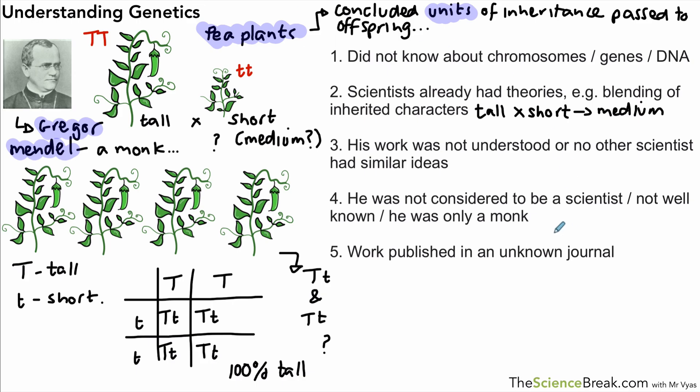His work, when he did publish it, was published in a fairly unknown journal. I believe it was some kind of gardening journal rather than a science journal, so not many scientists actually had a look to see what he had done and what he had written about. And the last thing was that he had only worked on pea plants. So even if his ideas were correct, he had only done the work on pea plants. Would it have the same results on other types of plant or even other living things?